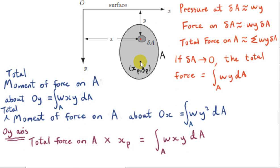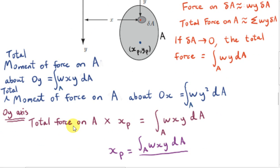Now let's locate the x-coordinate of the center of pressure. We can think of the center of pressure as the point at which the total force on A acts. The moment of that total force about the y-axis equals the total moment of the force on A about the y-axis. So on the left-hand side we have the total force on A multiplied by xp — the perpendicular distance to the y-axis — and on the right-hand side we have the total moment we calculated, which is the integral of Wxy dA. So we now have a formula for calculating xp.